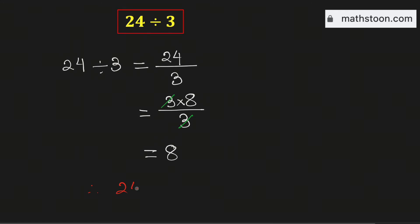Therefore, 24 divided by 3 is equal to 8. Now we will do this using the long division method.